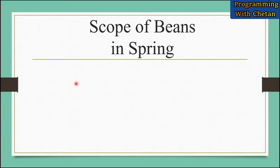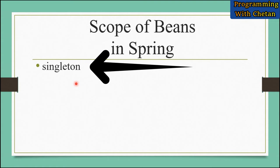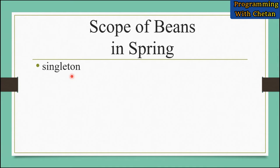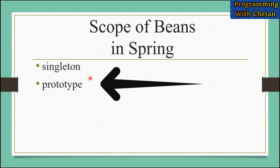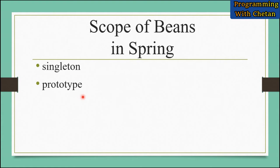Let us start with our first scope, that is singleton. When we declare the scope of a bean as singleton, then only a single instance of a bean is created by the IOC container. When we declare the scope of a bean as prototype, then multiple instances of a bean can be created by the IOC container. When we need a stateless bean, we can use singleton scope, and when we need a stateful bean, we can go with prototype scope.